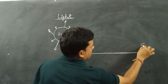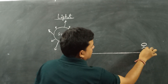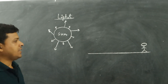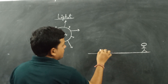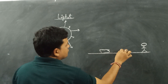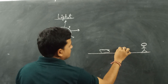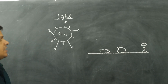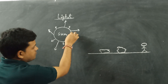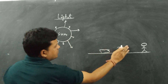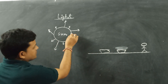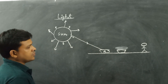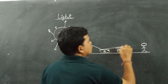There is an observer on the earth's surface, and different objects are here. Light energy coming from the sun falls on object A and reflects from it, reaching the observer's eye. That is why the observer can see the object.